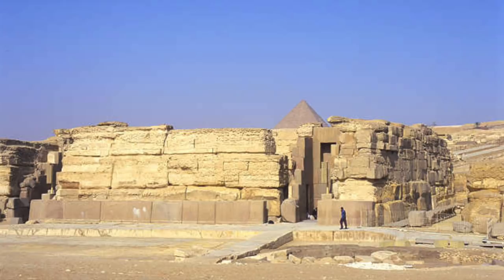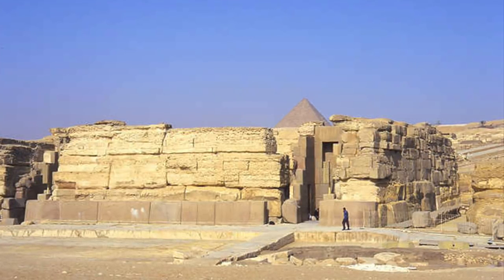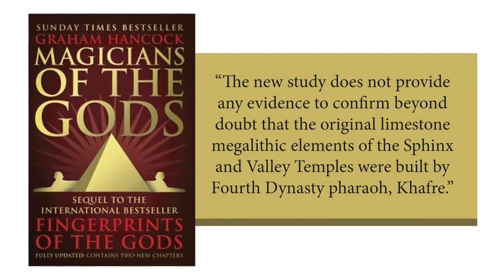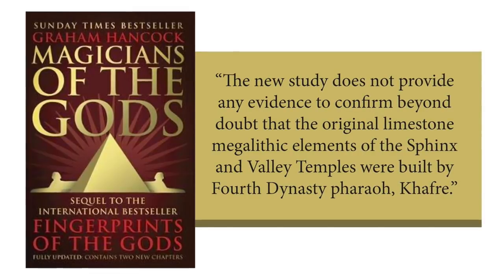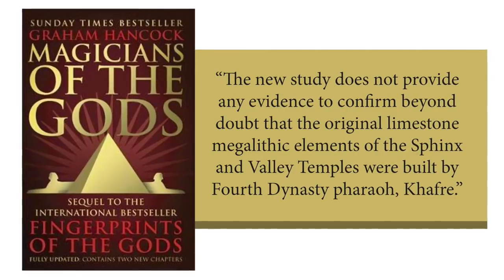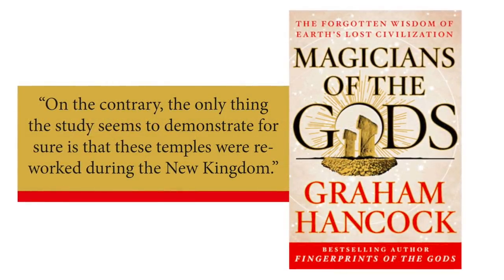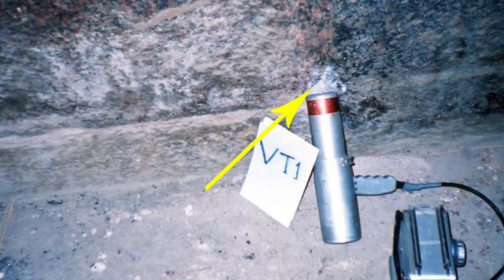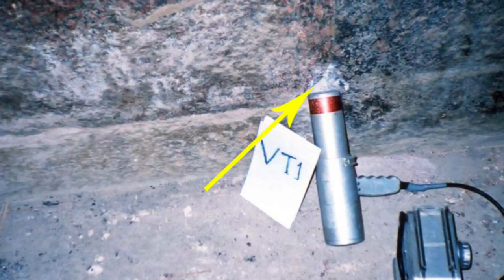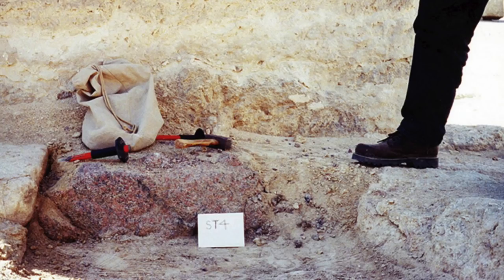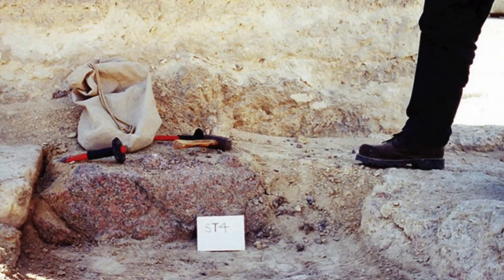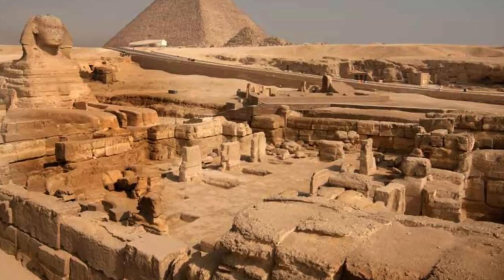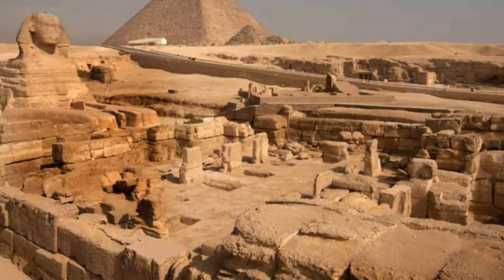Robert Schoch believes these two temples show evidence of Old Kingdom repair work, with weathered core limestone masonry covered by granite shielding, and therefore believes the granite inside the temples is a later addition. Graham Hancock mentions in his book that the study does not confirm beyond doubt that the original limestone megalithic elements of the Sphinx and Valley temples were built by Fourth Dynasty pharaoh Khafre. On the contrary, he argues the study only demonstrates that these temples were reworked during the New Kingdom. But the scientist who did the tests responded, saying the granite samples were not taken from restoration blocks — they were taken from whole blocks in contact with the bedrock on which the more megalithic limestone core masonry columns actually sit.